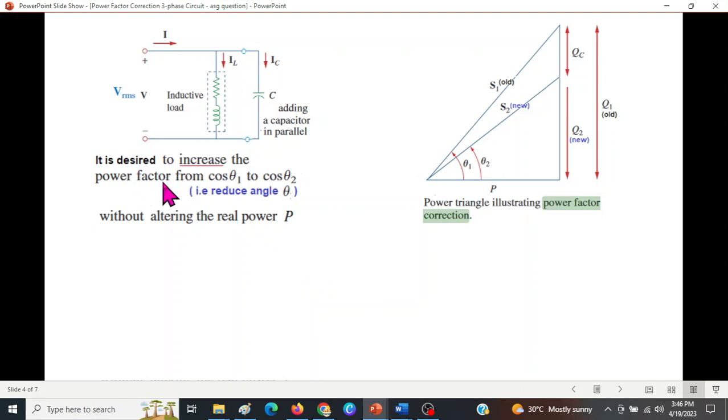Now it is desired to increase the power factor from cos θ₁ to cos θ₂, that is we want to reduce the angle θ. So reducing this angle here without altering the real power, the power should remain same.